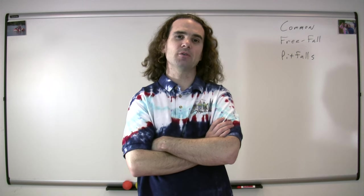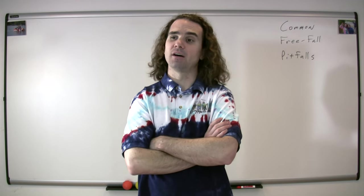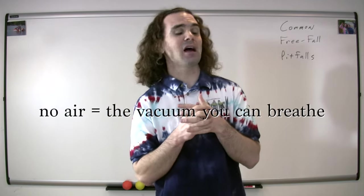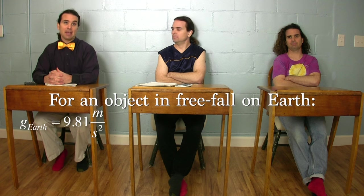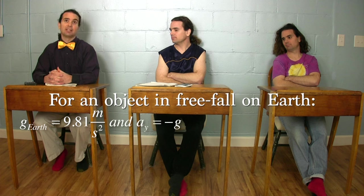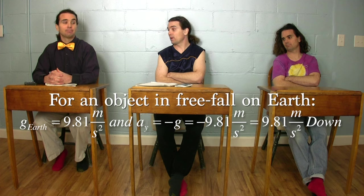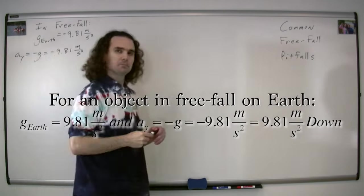Let's start with a quick review to make sure we're all on the same page. Bo, could you please remind me how do we identify an object in free fall? An object in free fall is one that isn't touching anything else, and there can't be any air. I like to call it being in the vacuum that you can breathe. And Billy, what do we know about an object that's in free fall on Earth? Little g, or the acceleration due to gravity on Earth, is positive 9.81 meters per second squared. And the acceleration in the y direction is equal to negative g, so the acceleration is negative 9.81 meters per second squared, or 9.81 meters per second squared down.